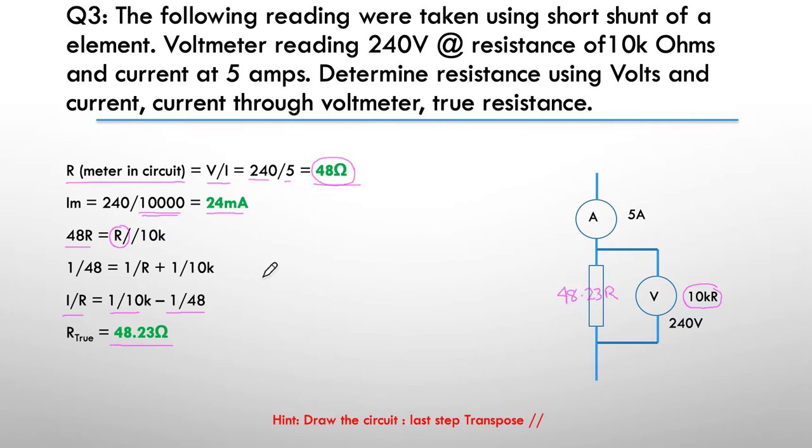The amp-voltmeter method worked as long as you take into consideration the value of the voltmeter. In this particular case there's only a small error caused by the voltmeter being put in circuit. You can see because 48 ohms compared to 10,000 ohms is only a very small amount, but it did cause this small error.